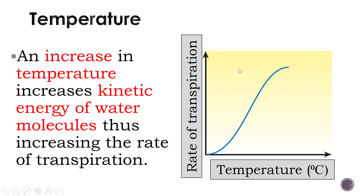The next factor is temperature. From the graph, when you increase the temperature, you see an increase in the rate of transpiration. When explaining this, you must include the term 'kinetic energy of water molecules.' In the condition of increased temperature, the water molecules within the leaves gain higher kinetic energy. Since higher kinetic energy means more movement, the water molecules will diffuse out, which explains why higher temperature increases the rate of transpiration — water is lost to the surroundings as water vapor.